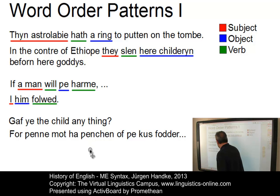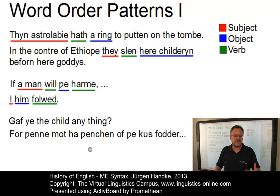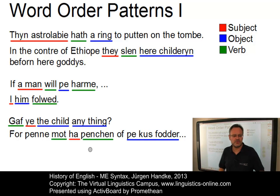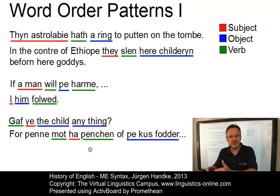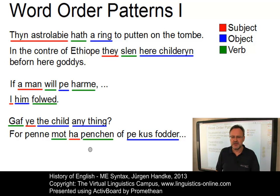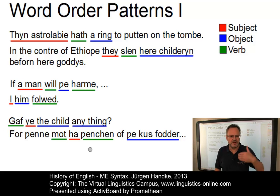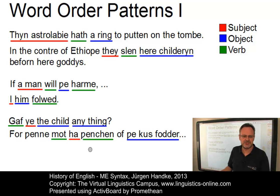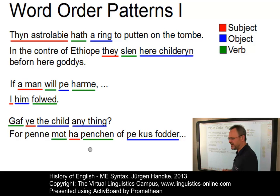Last but not least, we have these two patterns. 'Gave ye the child anything?' — an interrogative sentence. The VSO order was the rule in Middle English interrogative clauses, which as in Old English allowed the simple inversion of subject-verb to verb-subject. In standard declaratives it was only found in sentences with adverbial fronting. 'For then mot she think of the cow's fodder' — 'for then' is the adverbial, then the verb 'mot' follows, then the rest. Here we have a VSO pattern and the verb forms a verbal bracket interrupted by the subject.